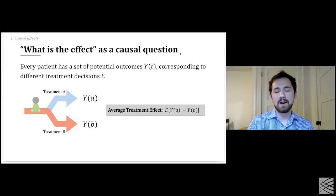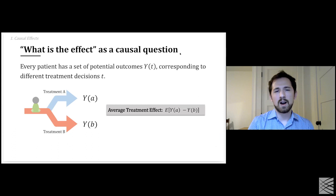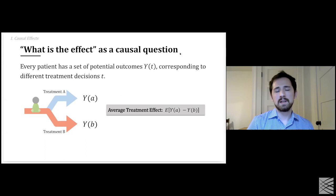Before we talk about methods, I want to first ground us in some formalism. I'll be using the potential outcomes framework to talk about this, though there are a variety of other equivalent formalizations. We're going to imagine that each patient has associated with them a set of potential outcomes — the different outcomes that would happen to them if we were to treat them a certain way.